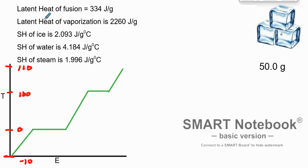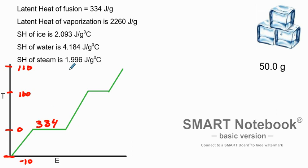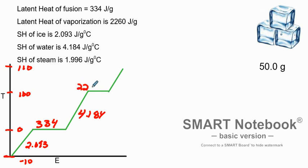We have a bunch of values here. Latent heat is when we have a phase transition. The latent heat of fusion is 334 joules per gram. When warming up the ice, we use the specific heat of ice, which is 2.093. When warming up the water, we use the specific heat of water.